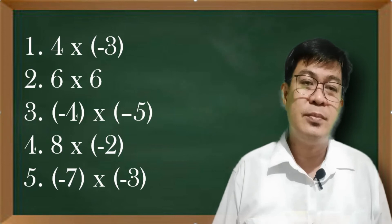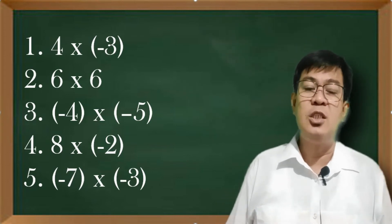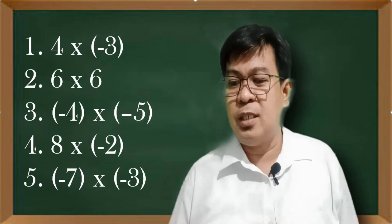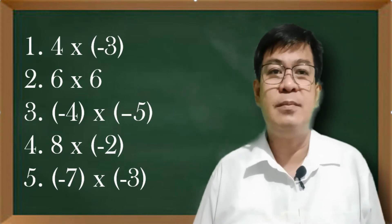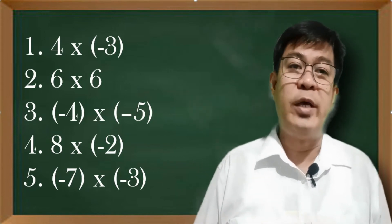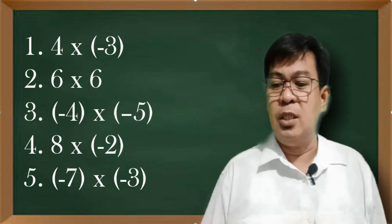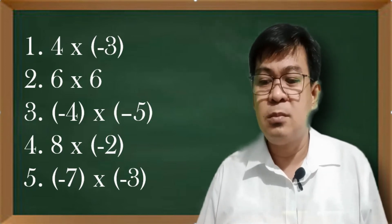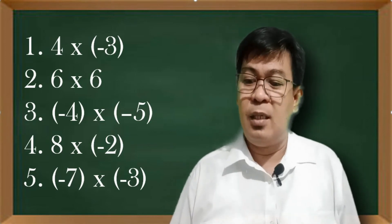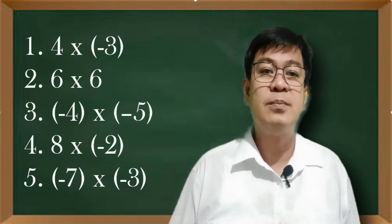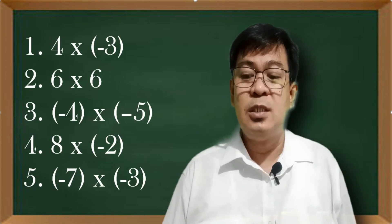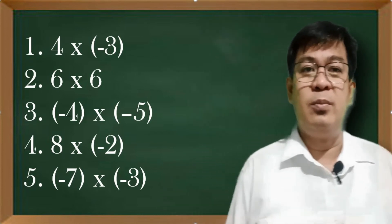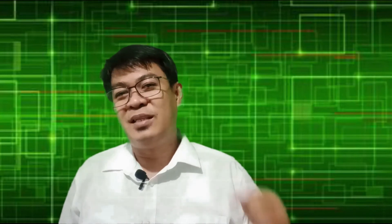Number 2, the answer is positive 36. Number 3, that's positive 20. Number 4 — very good — that's negative 16. And number 5, that is positive 21. Very good! So we got 5 correct answers. Outstanding, very good!